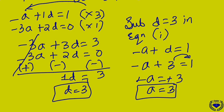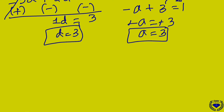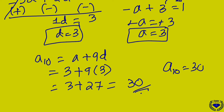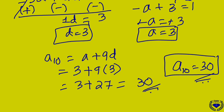With A = 3 and D = 3, the 10th term is A plus 9D = 3 plus 9 into 3 = 3 plus 27 = 30. So A10 is equal to 30. That is the answer. I hope you got this one.